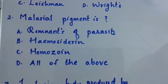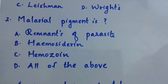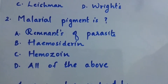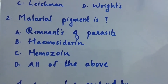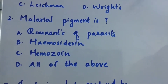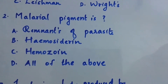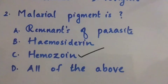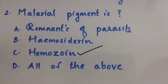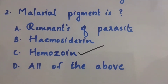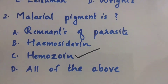Question number 2: Malarial pigment is — Option A: Remnants of parasite. Option B: Hemosiderin. Option C: Hemozoin. Option D: All of the above. The right answer is Option C, Hemozoin. Malarial pigment is Hemozoin.